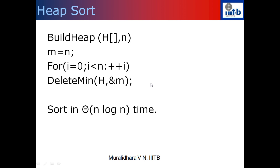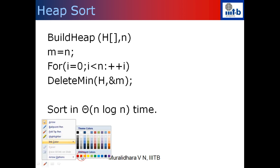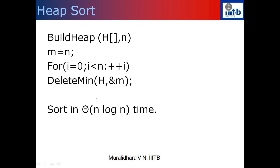In heap sort, given a sequence of numbers we want to sort them, say, in decreasing order. First we build a minimum heap, which takes O(n) time. After that, we delete each of these elements one by one. When I delete the first element, it is swapped with the last location. When I delete the second element, it is placed in the last-but-one location. When I delete the last element, nothing happens — it will be in the first location. If you report the numbers in the order they are deleted, you get a sorted sequence in increasing order. If you access the array h after deleting all numbers, you get them in decreasing order.